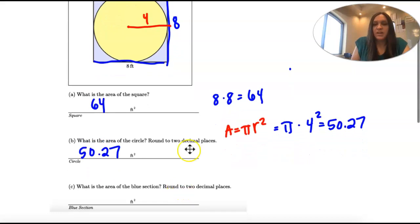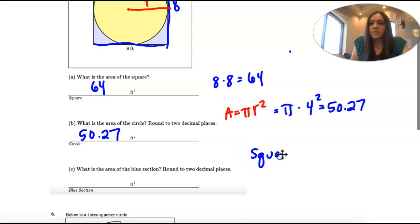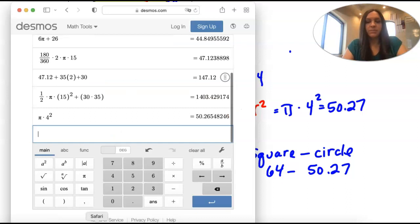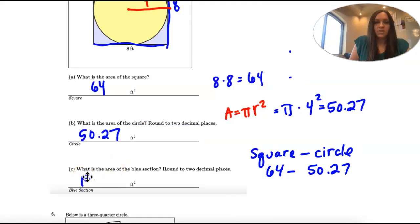Now we want the area of the blue section. We're going to take the area of the square and subtract the area of the circle. All that's going to be left is that blue section. So 64 minus 50.27, the two things we've already found, which is 13.73 square feet.